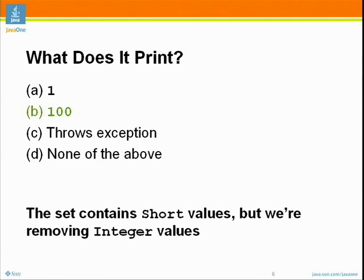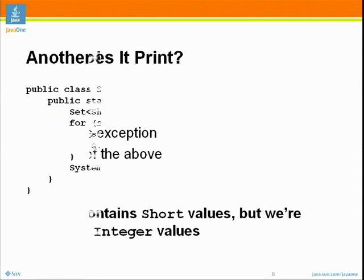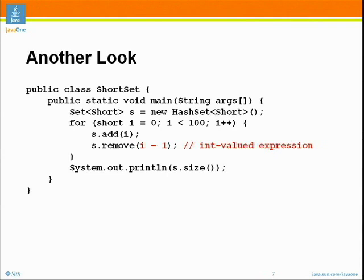The problem is that i minus 1 is an int-valued expression. I is short and 1 is a little tiny number, but whenever you perform any arithmetic operation on anything that could be an int, the result is either an int or possibly a long. Any sort of integer operation involving shorts, bytes, or anything produces something of type int. So this int computation gets auto-boxed into an Integer object. The short containing the value 1 and the Integer containing the value 1 are actually distinct objects that do not compare as equal. Thus, if you have a set that contains the short 1 and remove the Integer 1, it is a no-op.